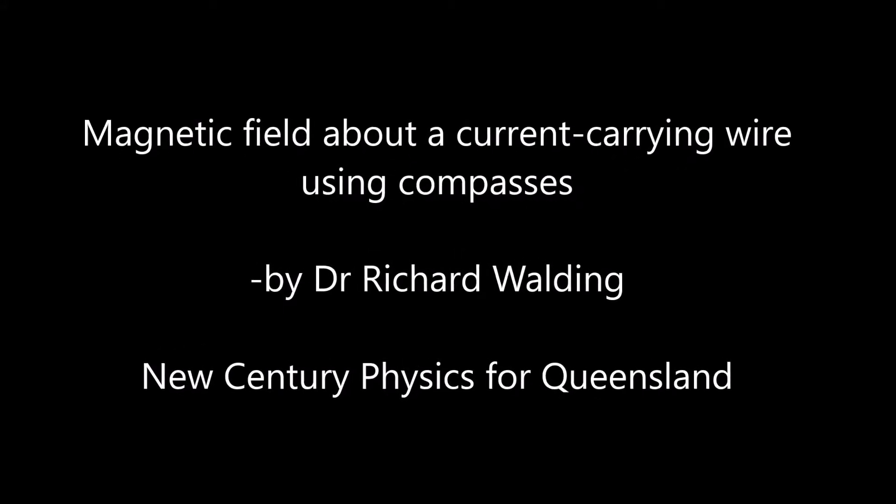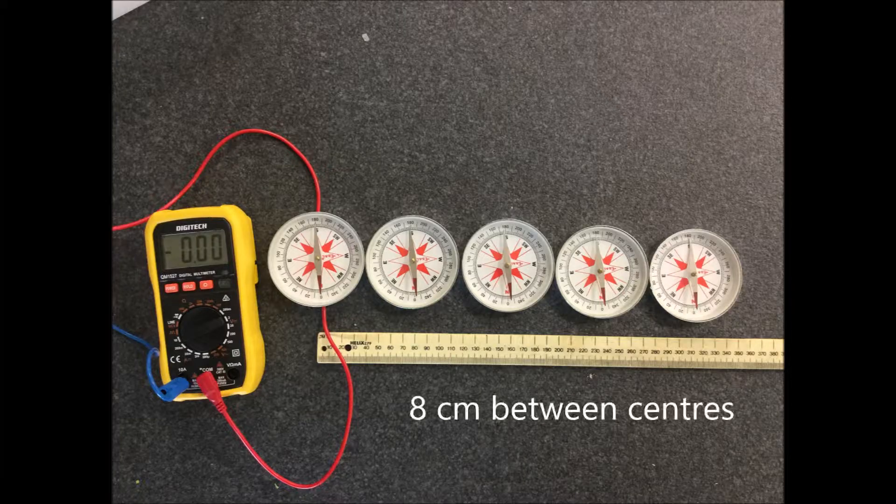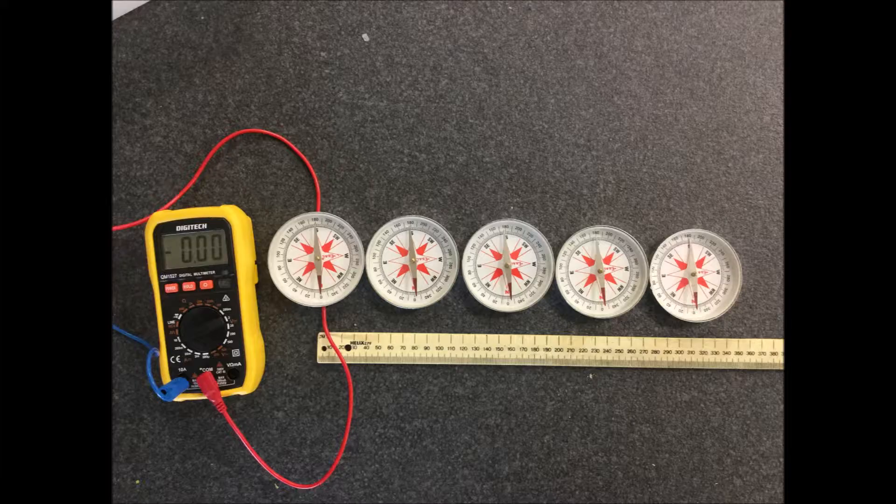This is a simple demonstration of the magnetic field about a current carrying wire using compasses. You can see I've got five compasses here all pointing north, and they're about eight centimeters apart.